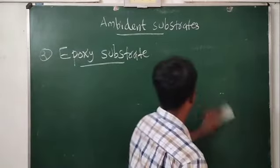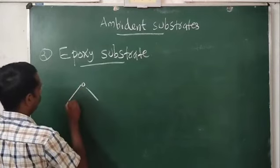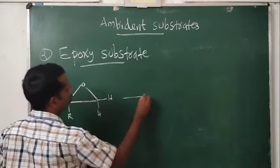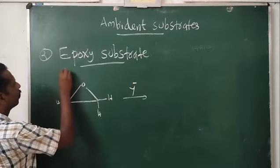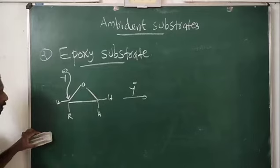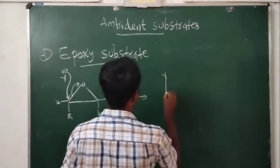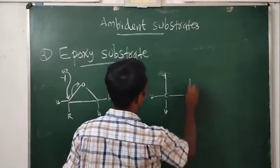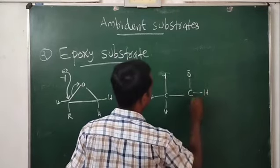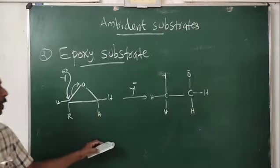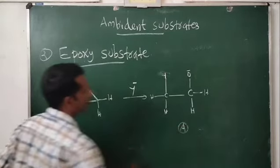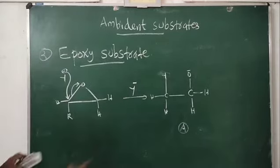Look at what products A and B are. For product A, the nucleophile Y⁻ attacks on one carbon of the epoxide. This bond breaks and moves to oxygen, so we get a structure where Y is attached to that carbon and the oxygen becomes O⁻. This is product A.